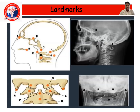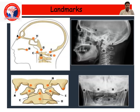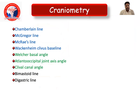The landmarks are essential for measuring craniovertebral junction anomalies, compared against normal values. Craniometry includes many lines: Chamberlain's line, McGregor's line, McRae's line, Wackenheim-Clivus baseline, Boogaard's basal angle, atlanto-occipital joint axis, Clivus-Canal angle, bimastoid line, and digastric line.